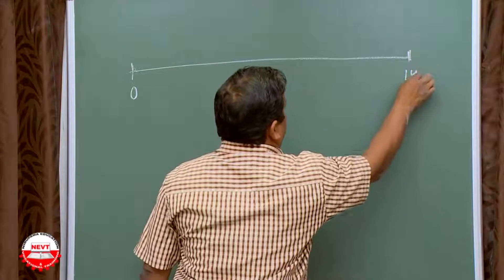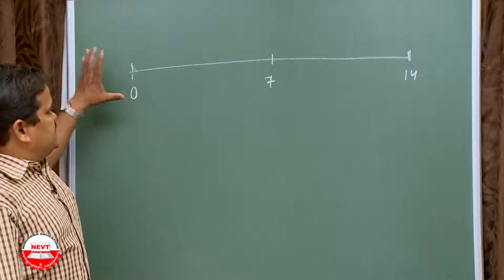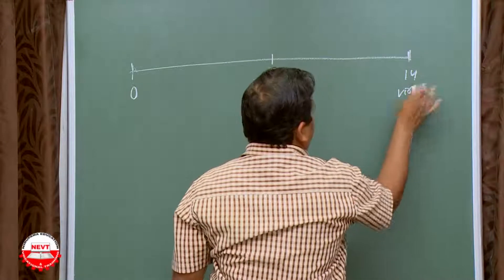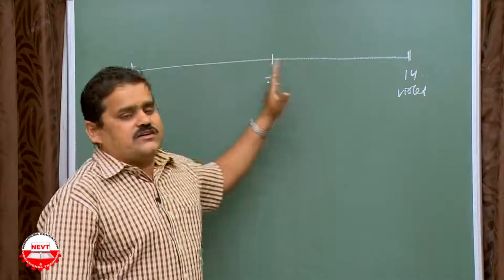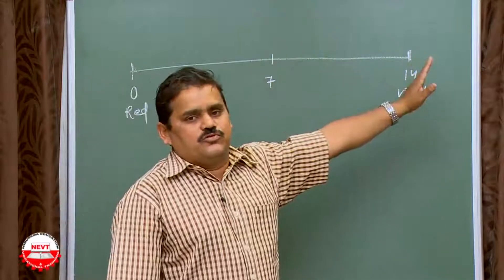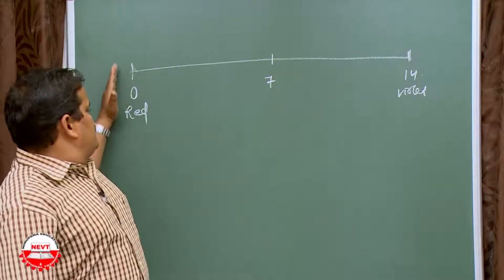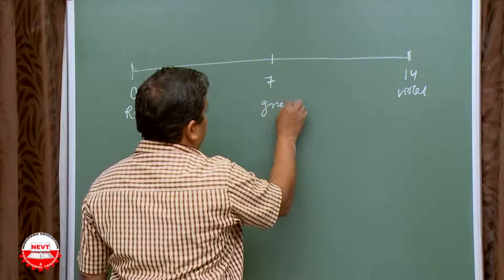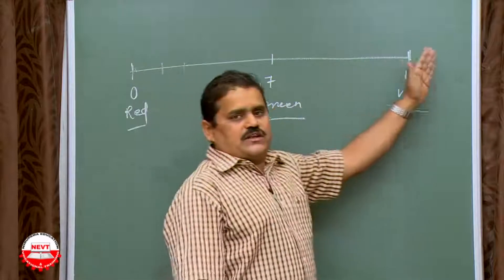The pH scale ranges from 0 to 14, with 7 in the middle. Each value on the scale has a definite color: pH 14 is violet or blue, pH 0 is red, and the neutral middle point (pH 7) is green. These colors correspond to those on a pH paper or litmus paper — just as all acids turn blue litmus to red, and bases turn red litmus to blue.